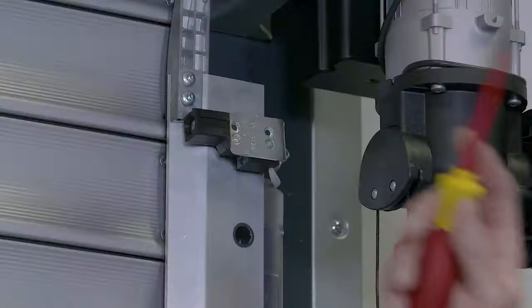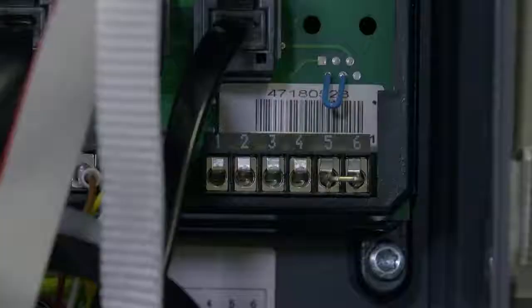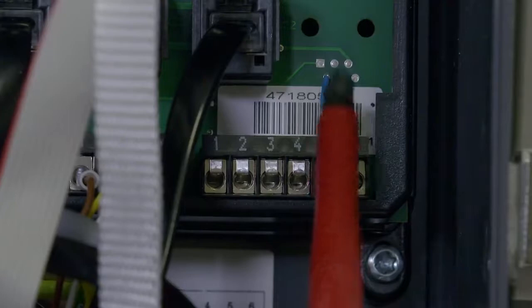On this door we have a high level optical safety device fitted to prevent trapping. If it's not required, the blue link in the control panel must be cut with the power off.